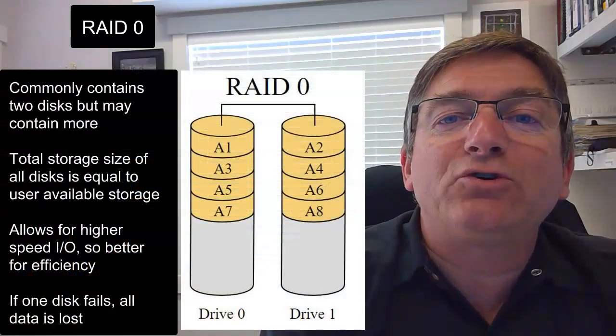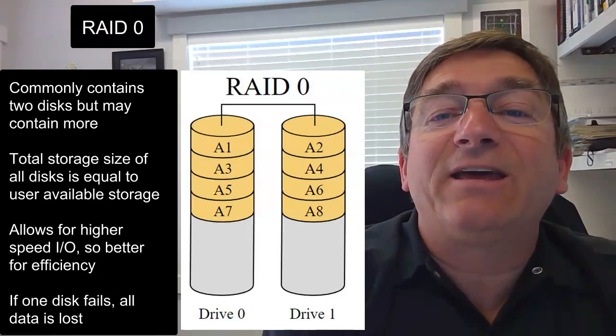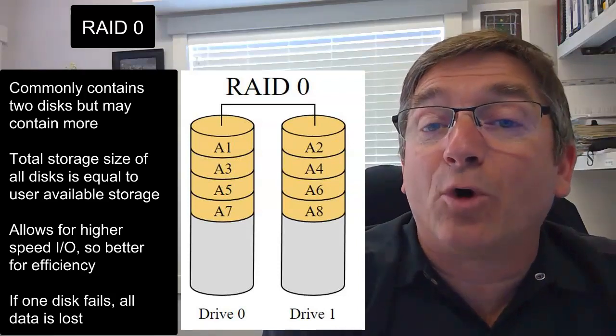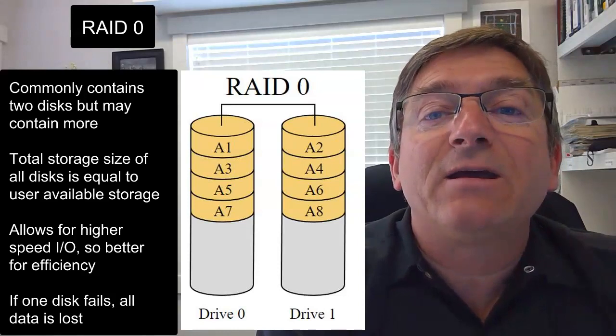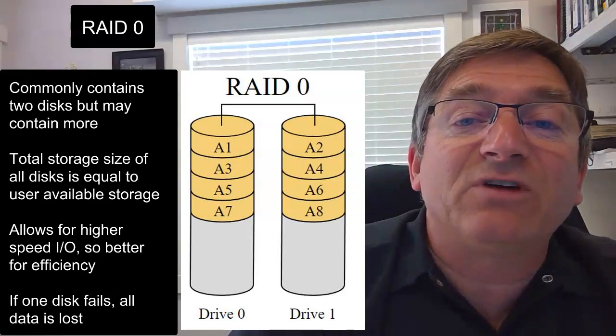RAID 0 is usually created through the use of two hard drives. They don't have to be two, you can use more, most people don't realize that. But typically you're going to see two disks, and usually you're going to see two disks of the same size.